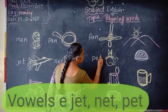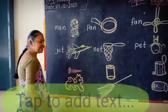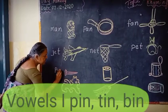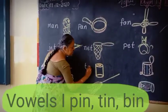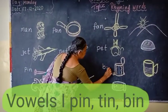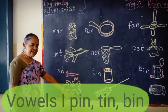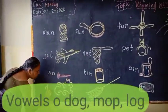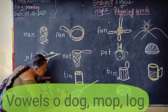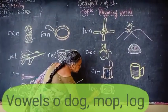P-I-N, pin. See the picture, children. P-I-N, pin. Next: B-O-G, dog. M-O-P, mop. This is the I sound. The next is O sound.